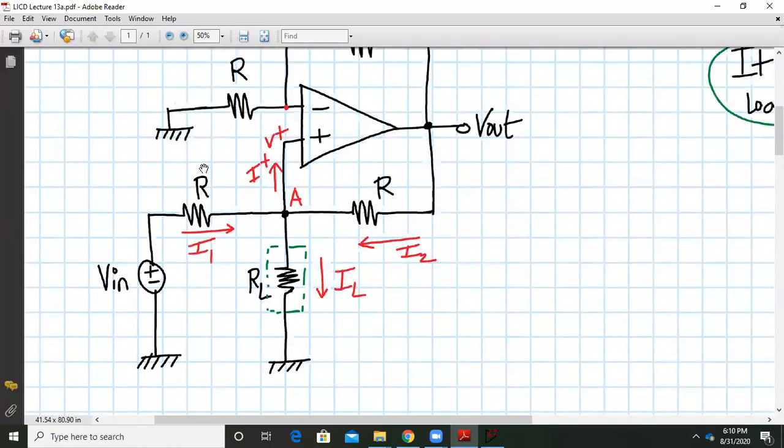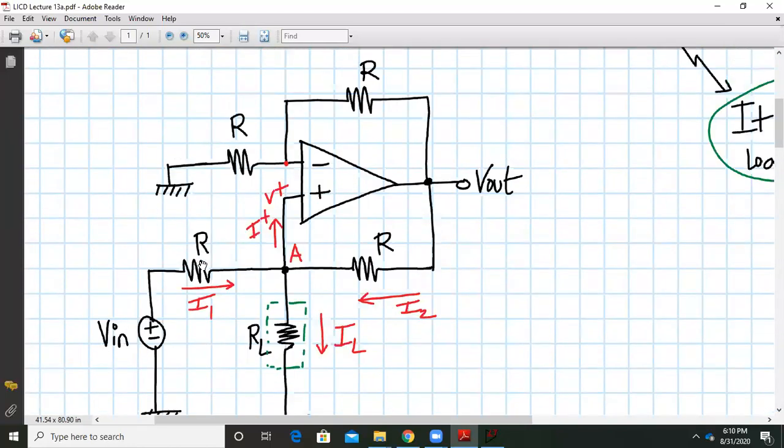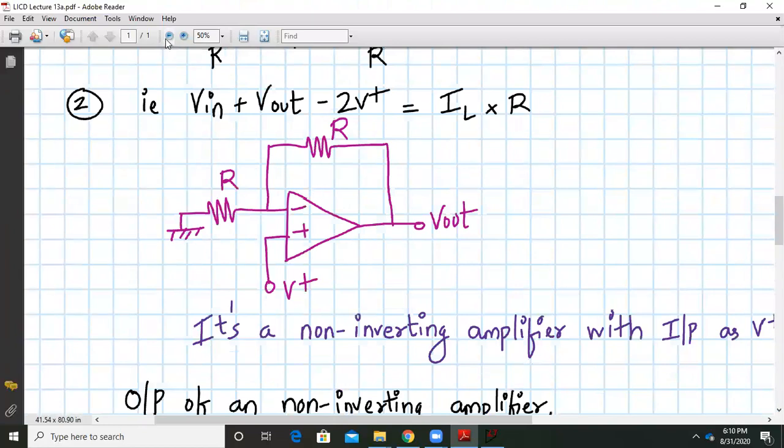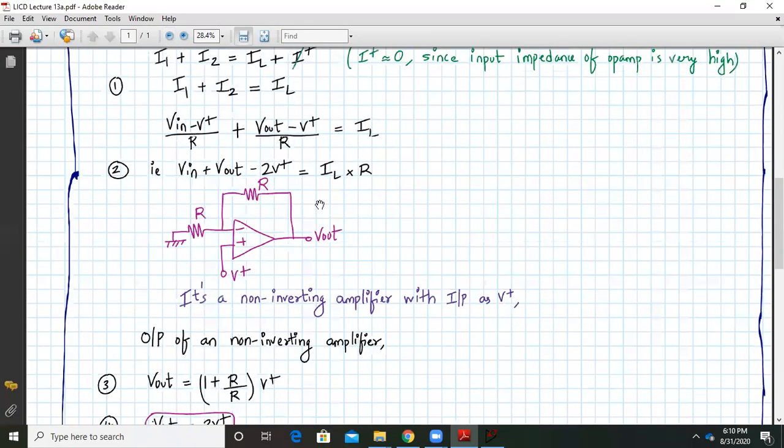If you look into this circuit carefully, it's like a non-inverting amplifier with input as V plus. If we redraw the circuit, we may get like this. After redrawing the circuit, we get this non-inverting amplifier with input as V plus.